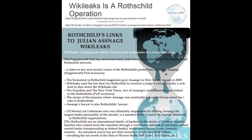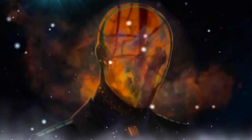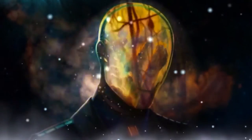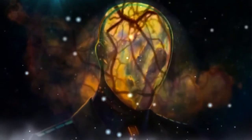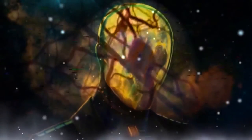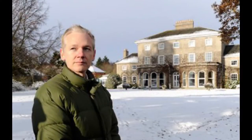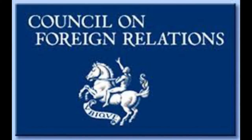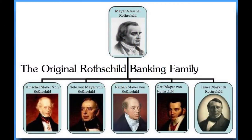Anonymous has uncovered many links between WikiLeaks and the international Rothschild network. A sister-in-law and second cousin of the Rothschilds posted bail for Julian Assange. The Economist, a Rothschild magazine, gave Assange its new media award in 2008. WikiLeaks used the law firm Fox Rothschild to overturn a judge's ruling. The Guardian and The New York Times, two of Assange's media partners, are linked to the Rothschilds. The owner of the mansion where Assange was eventually put under house arrest has links to Rothschilds. Assange's lawyer is also Rothschilds' lawyer. U.S. Senator Joe Lieberman, who was ultimately responsible for making Assange the largest media personality of the decade, is a member of the Council on Foreign Relations, a Rothschild organization.